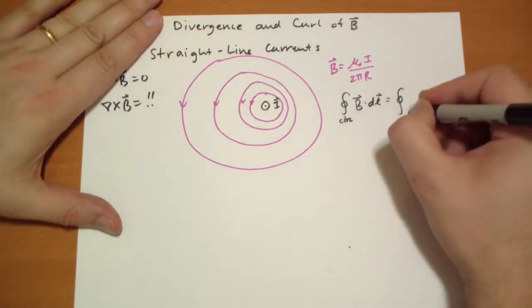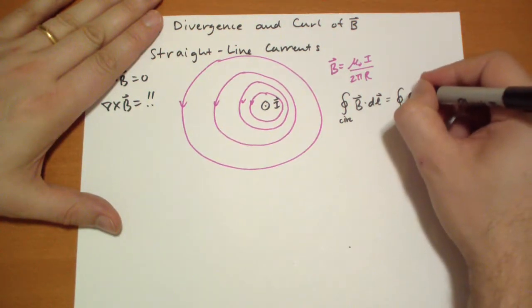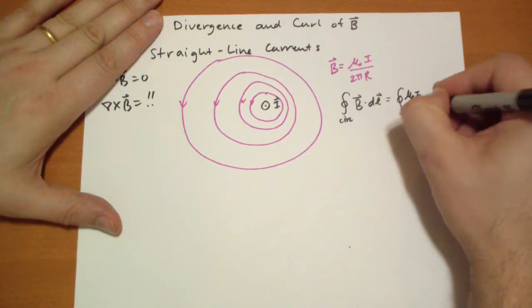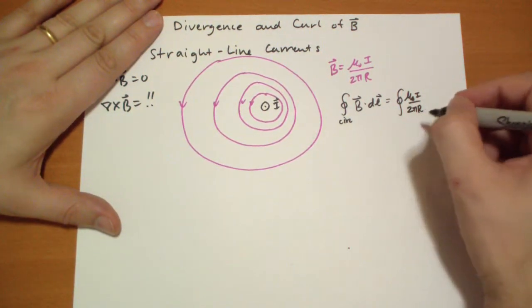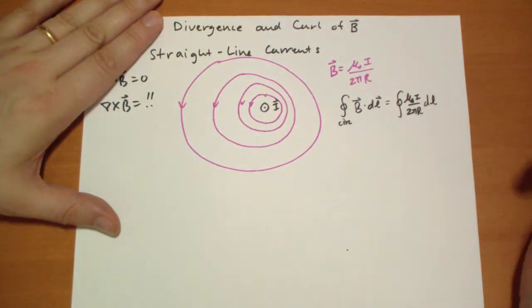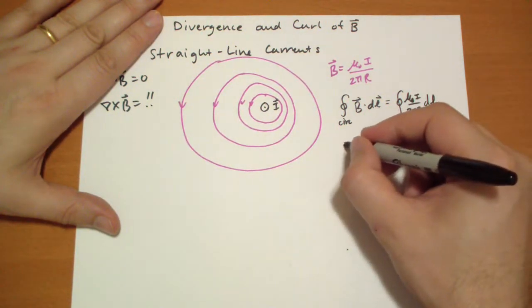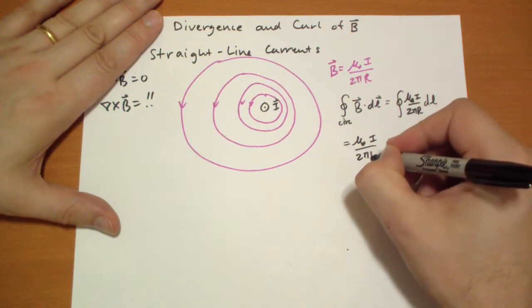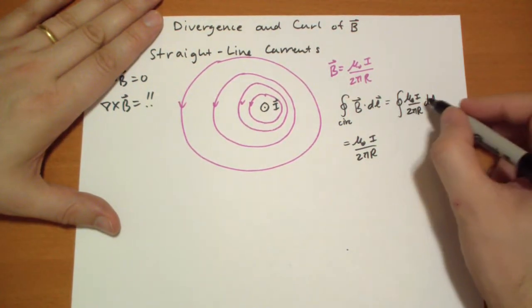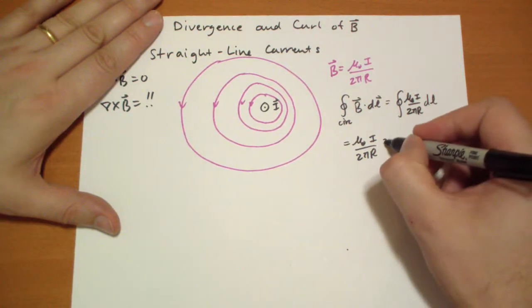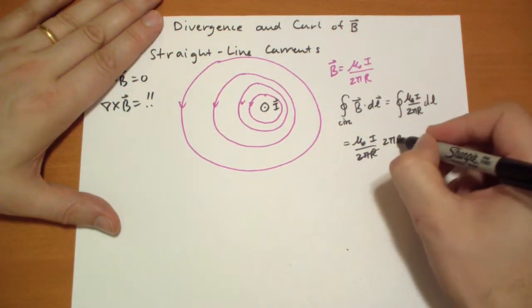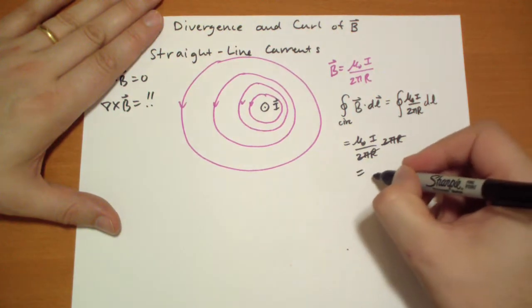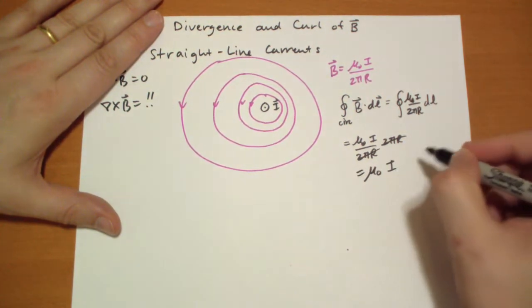Well, for our circle, the B vector is constant, it doesn't change at all. It's equal to the radius of the circle R times DL. They're pointing in the same direction, we don't have to do any cosine thetas or anything like that. So we take out that because it's constant, and the closed loop integral DL of a circle of radius R is just 2πR. So these two cancel, and you get μ₀I.